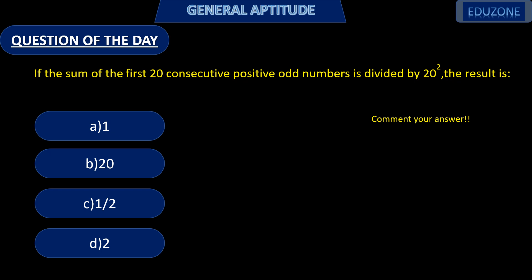Now, the question of the day: If the sum of the first 20 consecutive positive odd numbers is divided by 20 squared, the result is — comment your answer below. Thank you.